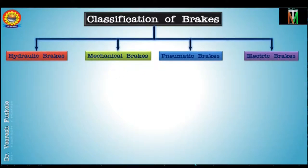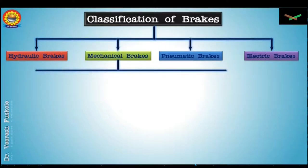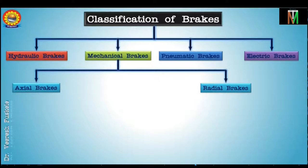Brakes are devices that dissipate kinetic energy of moving parts of a machine. In mechanical brakes, the dissipation is achieved through sliding friction between a stationary object and a rotating part. These are used for low power absorption. Depending upon the direction of application of force, mechanical brakes are primarily of two types: radial brakes and axial brakes.